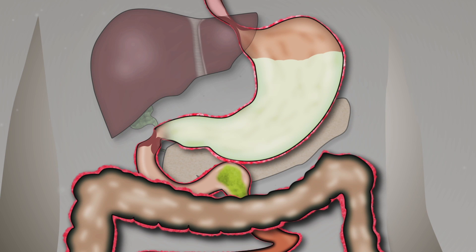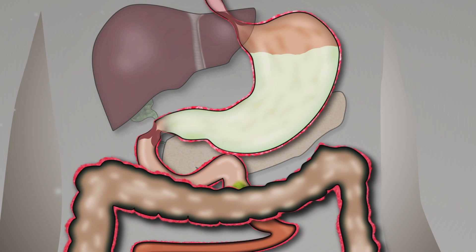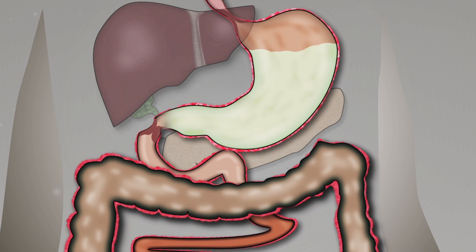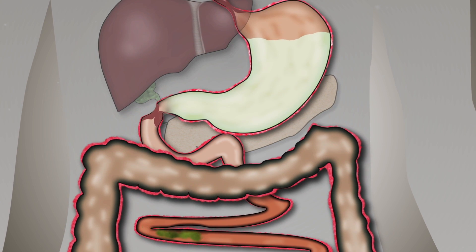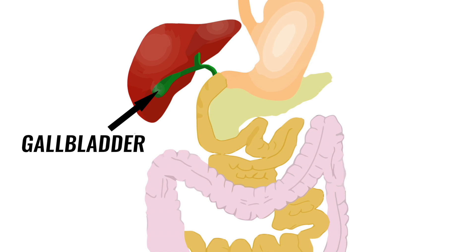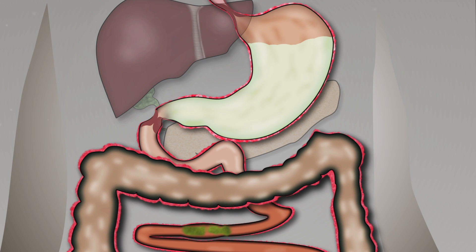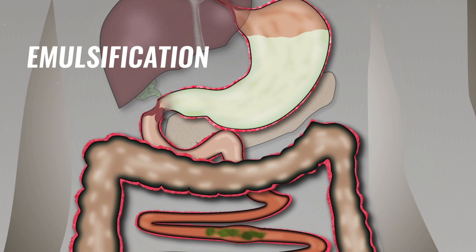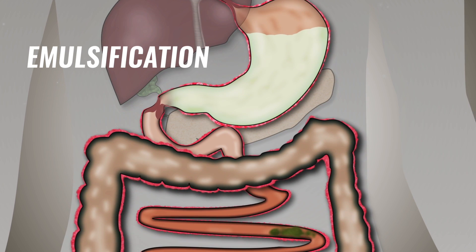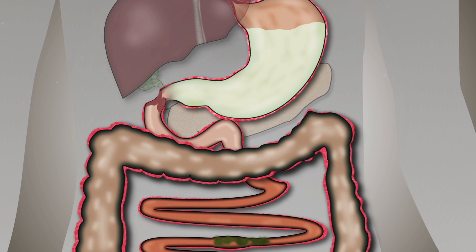Food enters the small intestine via the duodenum in a timely and controlled fashion. This is because when food enters the duodenum, the gallbladder and pancreas are stimulated, resulting in the release of pancreatic enzymes and bile. Bile breaks fats down into smaller pieces, known as emulsification, ensuring optimal conditions for lipase to digest fats.